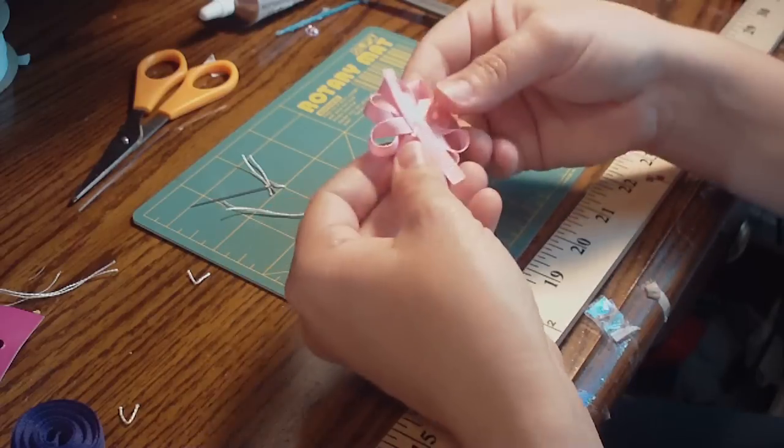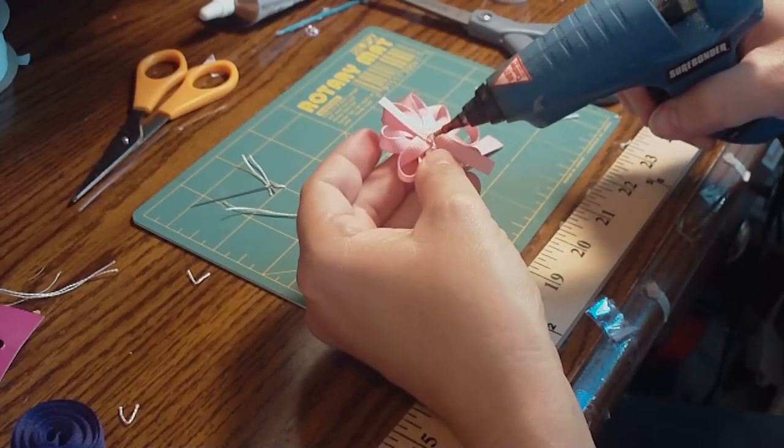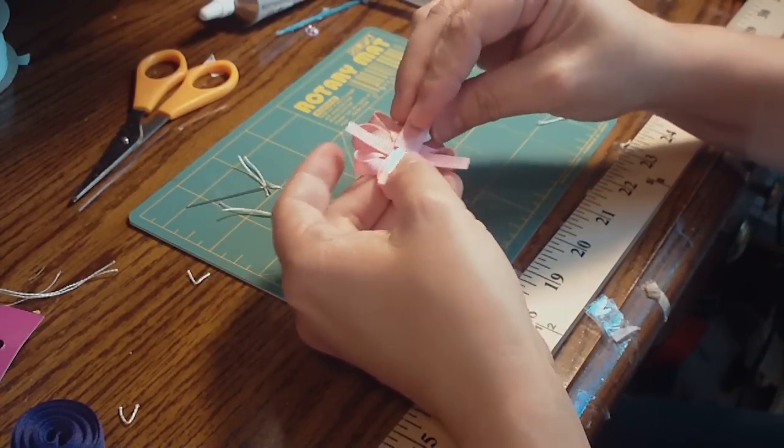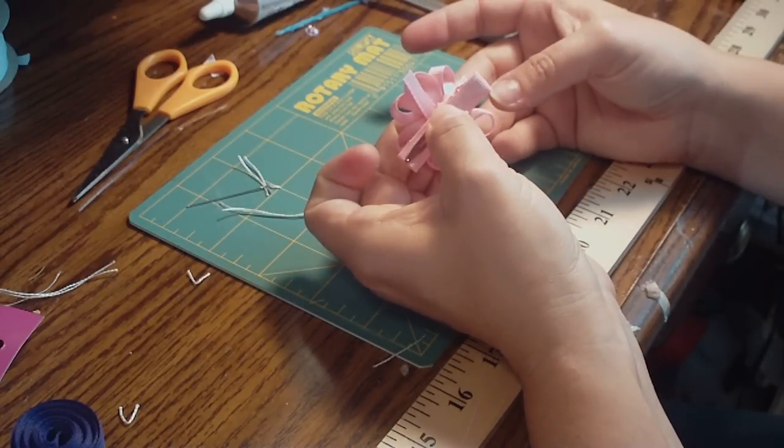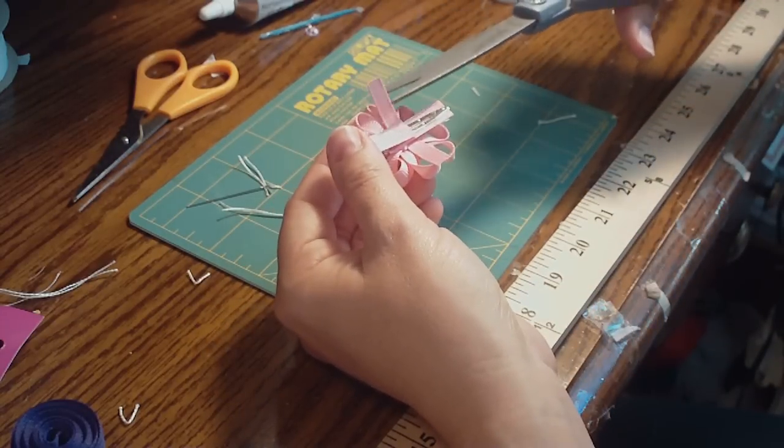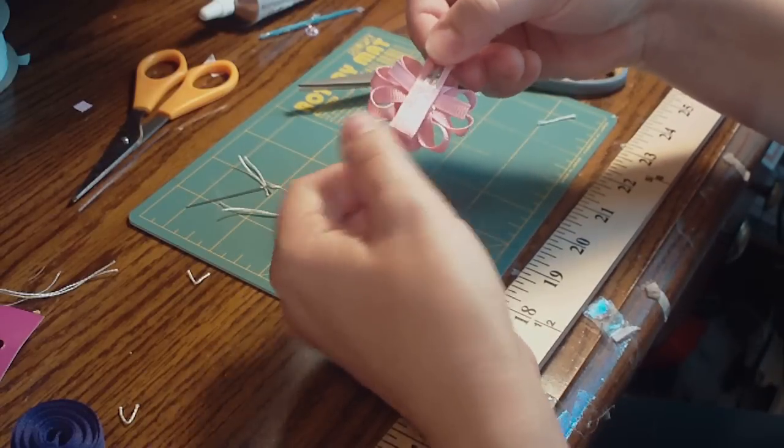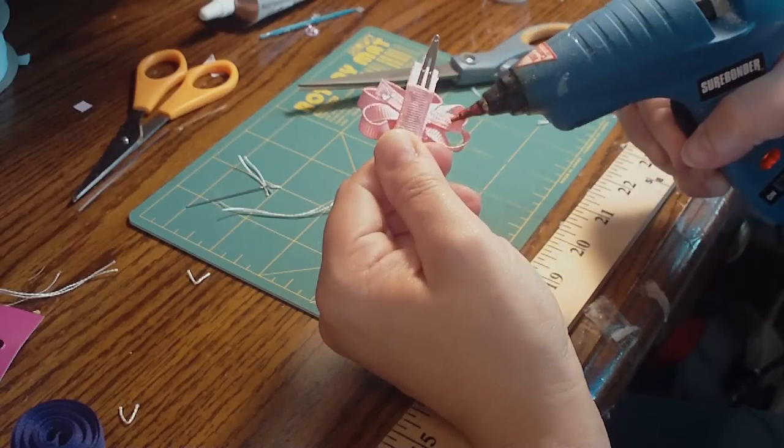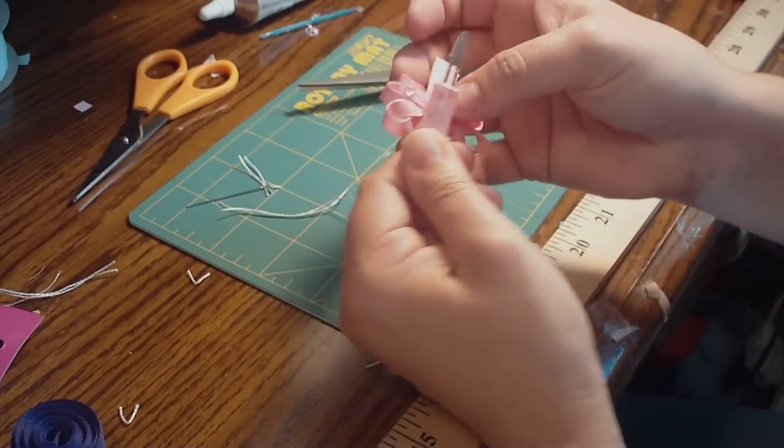Now we're going to attach it to our flower. So turn your flower over, put a dot bit of glue, and then I attach our alligator clip. Just like that. Just press it down. Make sure it grabs. And then we're going to trim our little piece. And then that's going to wrap around so that it stays on, attached to the alligator clip.